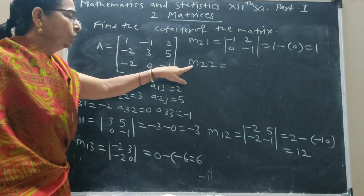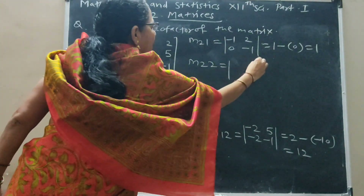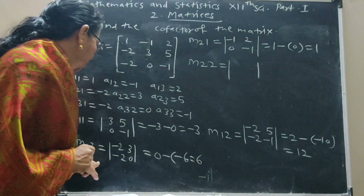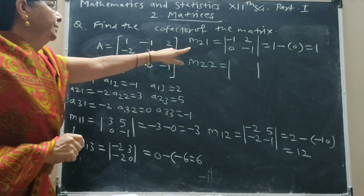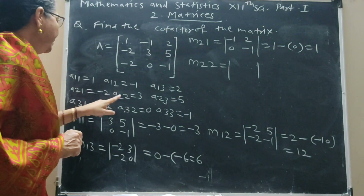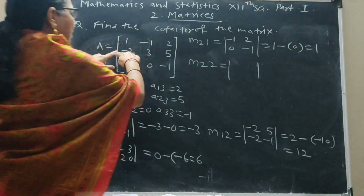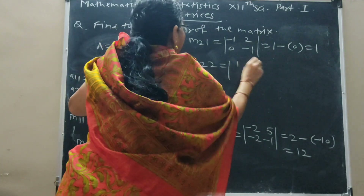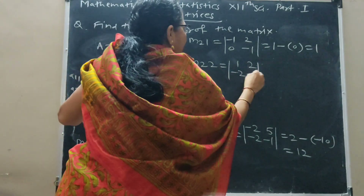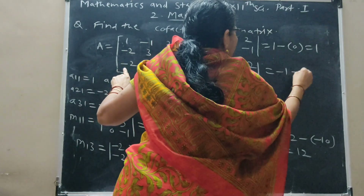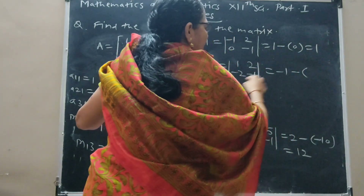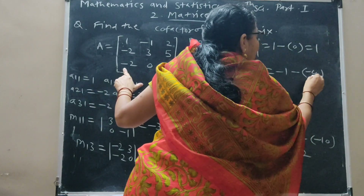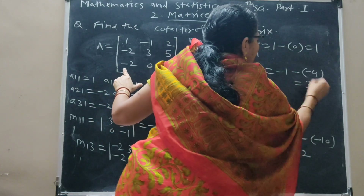Now M22: delete the second row and second column. Remaining elements are 1, 2; minus 2, minus 1. This gives minus 1 minus (minus 4), which is minus 1 plus 4, equals 3. So M22 = 3.